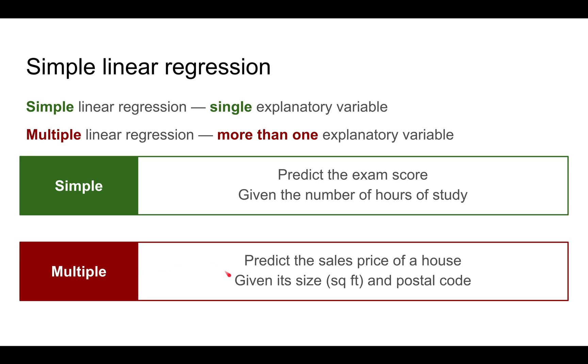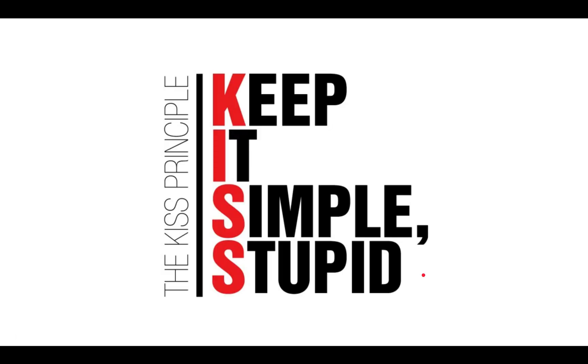The second example, where you predict the sales price of a house using the size and the postal code, those are two different independent variables. So this is considered multiple linear regression. I like to start with simple linear regression because of the KISS principle, which says keep it simple, smarty pants.